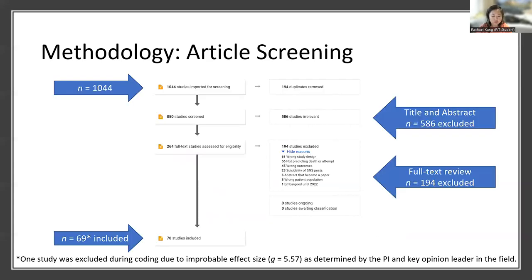Here we have a flow diagram of the article screening process. We began with an initial 1,044 articles. 586 articles were excluded in the title and abstract screening phase, and an additional 194 articles were excluded in the full-text review screening phase. 70 articles were left to be included in the analyses.